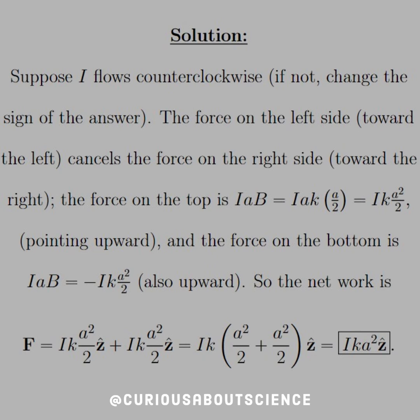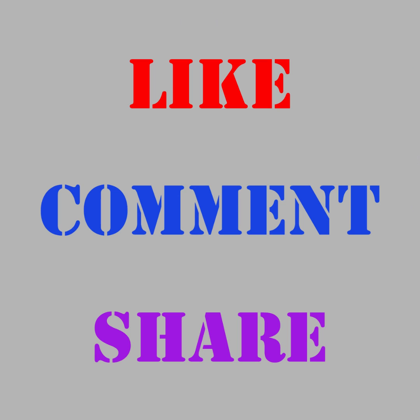So then the net force in this situation is the addition of these two, so we just have to add Ika squared over 2 twice and that's why we can see that we factored out an Ik and we're left with Ika squared in the z-hat direction. We'll see you soon.